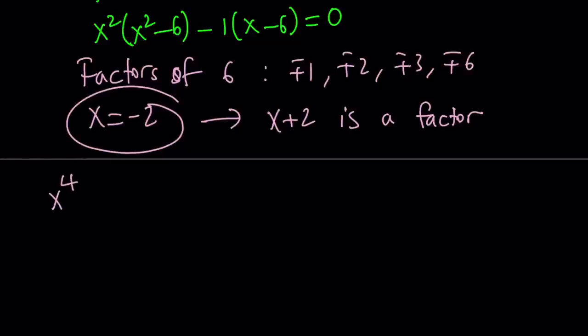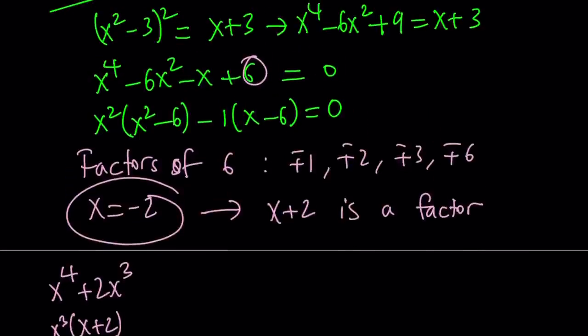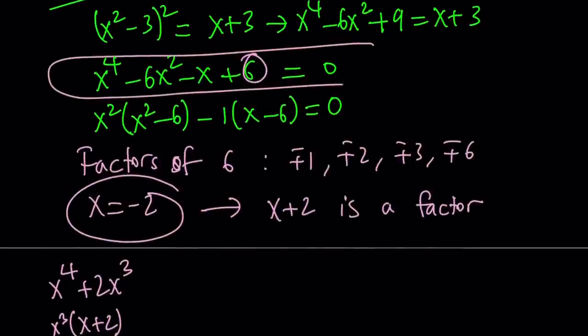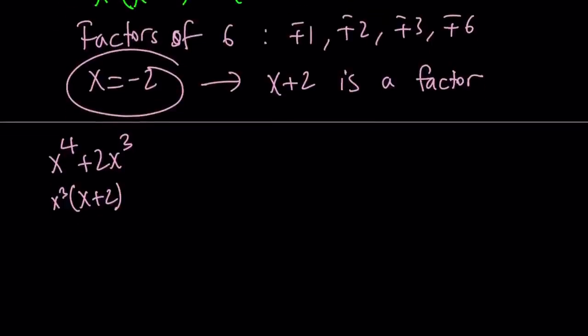And we can arrange the terms so that x plus 2 is always a factor. So like this. Start with x to the 4th, and then add 2x cubed to it. And the reasoning behind this is if you take out an x cubed, you're going to get x plus 2. So we know x plus 2 is going to be a factor. Make sense? But you don't have x cubed in the original equation. So what can I do? I can just eliminate it. So add, subtract, add, subtract, so on and so forth.